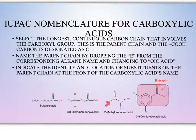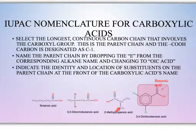On this one, we have one, two, three carbons for our longest chain with a smaller chain coming off, so we would call this propanoic acid. That side chain comes off of carbon two, so that would be 2-methylpropanoic acid.